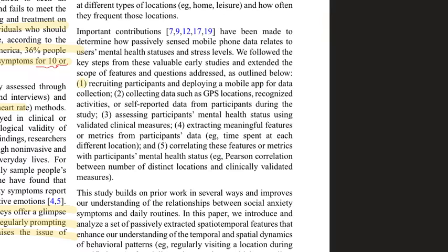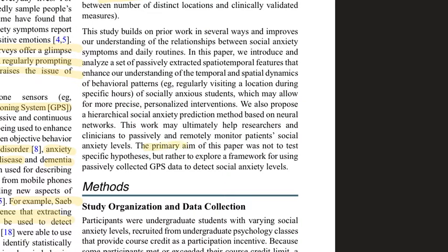The main steps in this article were: first, recruiting the participants; second, collecting GPS information during two weeks along with self-reported data and activity recognition results; and third, assessing participants' mental health. The main aim was to explore a framework for using passively collected GPS data and relate it to individuals' social anxiety levels.